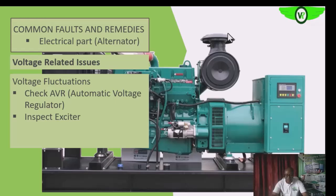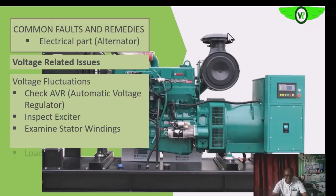We want to inspect the entire excitation system. It is also possible that the stator winding or the field winding is having problems. Since the field winding is not accessible, we want to check the stator winding — check for grounding, and if we have a provision, check the winding resistance with a low resistance meter and check continuity to ground to assess the insulation level.